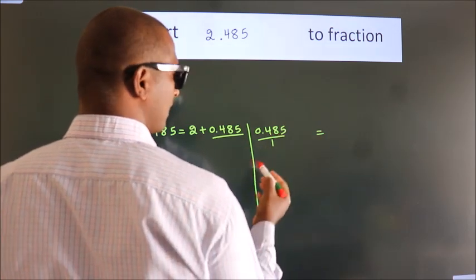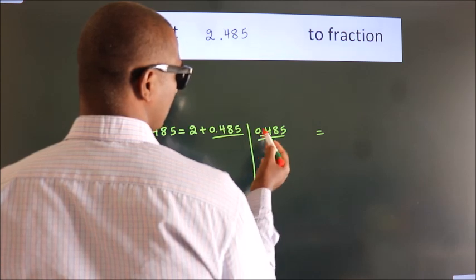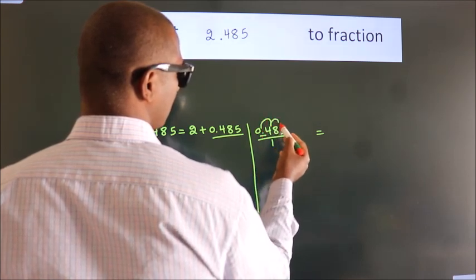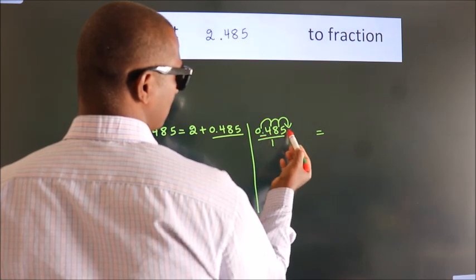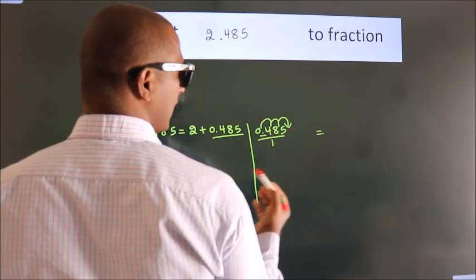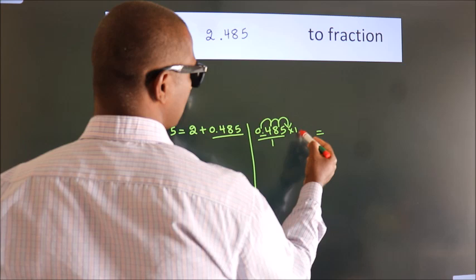For that we have to move this decimal after 1, 2, 3 numbers. To move this decimal after 3 numbers, for that we have to multiply it with 1000.